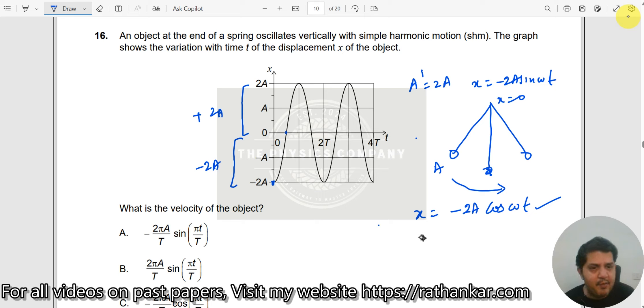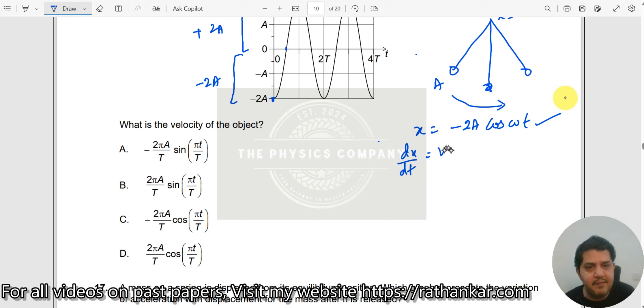Now what we do is, I don't want the position, I want the velocity. So differentiate this. dx by dt is equal to velocity v, which would be equal to minus 2a omega sin omega t.